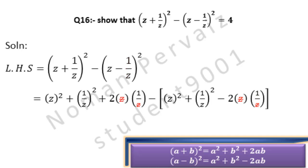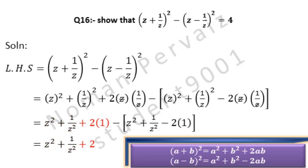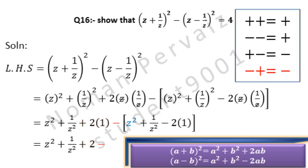Now in both cases, z cancels with z. We have: z² + 1/z² + 2 minus (z² + 1/z² - 2). The z² terms cancel, the 1/z² terms cancel, and 2 multiplied with 1 becomes 2. Minus multiplied with plus becomes minus, giving us 2 + 2.